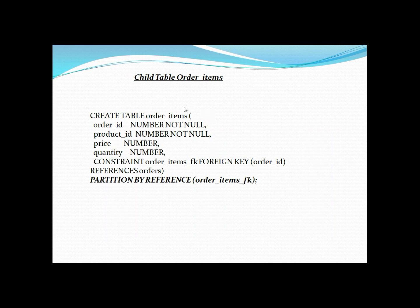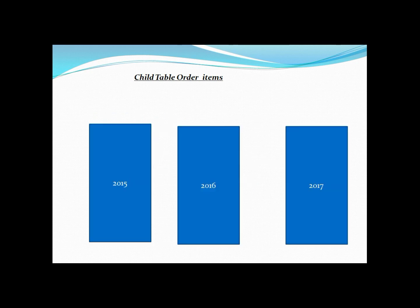I have another table 'order_items' and, although it does not have the column 'order_date', I can still partition it based on 'order_date' using reference partitioning. The only constraint is that this table must have an explicit foreign key relationship with the parent table. Using the syntax 'PARTITION BY REFERENCE' and specifying the foreign key, this child table will get three partitions created on disk — one for 2015, one for 2016, and one for 2017.